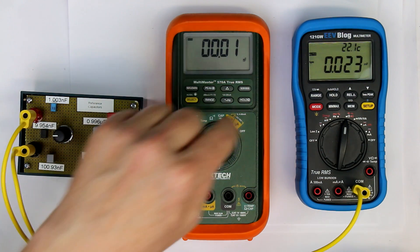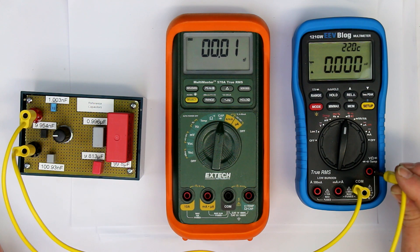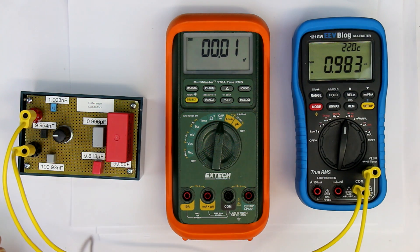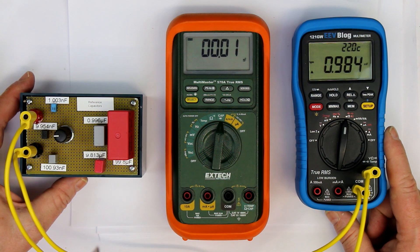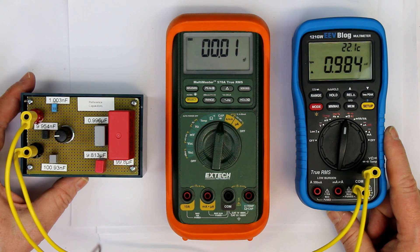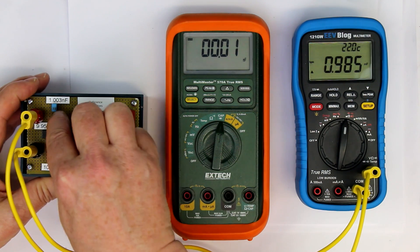So first we have to null out to relative. So here we have one picofarad resolution. The stated accuracy is, remember, 2.5% as far as I remember. And we're 1.5% off. So that's okay.